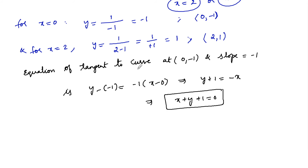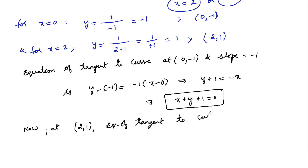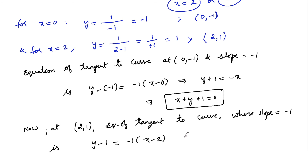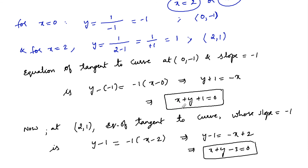Now the equation of tangent to the curve at point (2, 1) with slope -1: y - 1 = -1(x - 2), giving y - 1 = -x + 2, so x + y - 1 - 2 = 0, that is x + y - 3 = 0. The two required equations are x + y + 1 = 0 and x + y - 3 = 0.